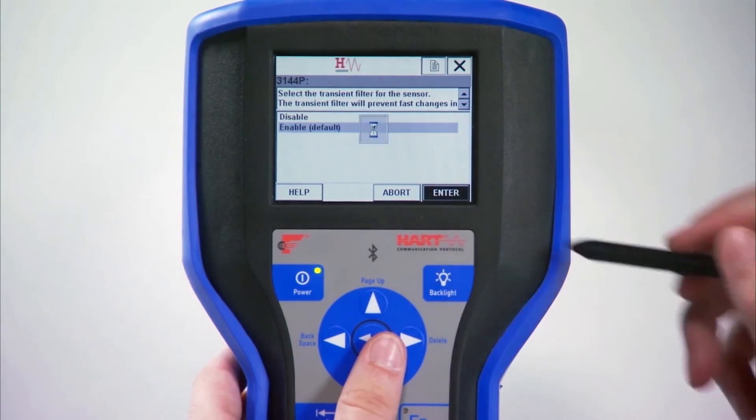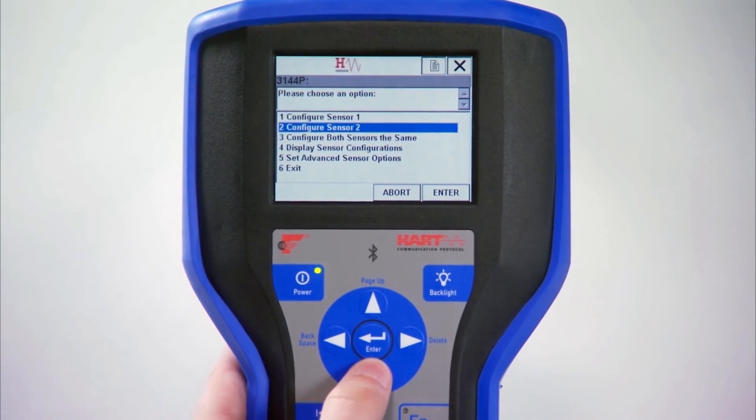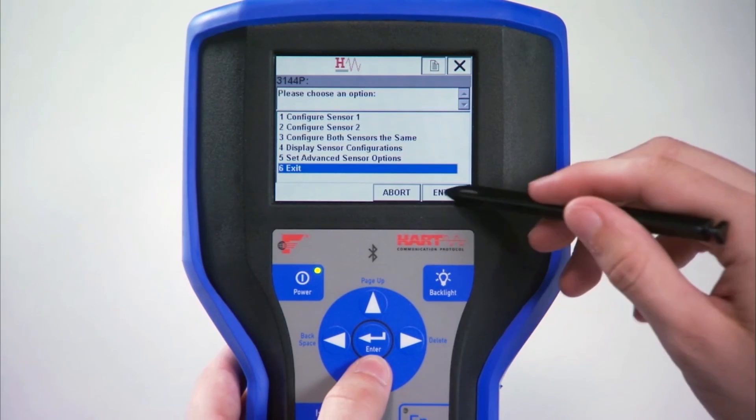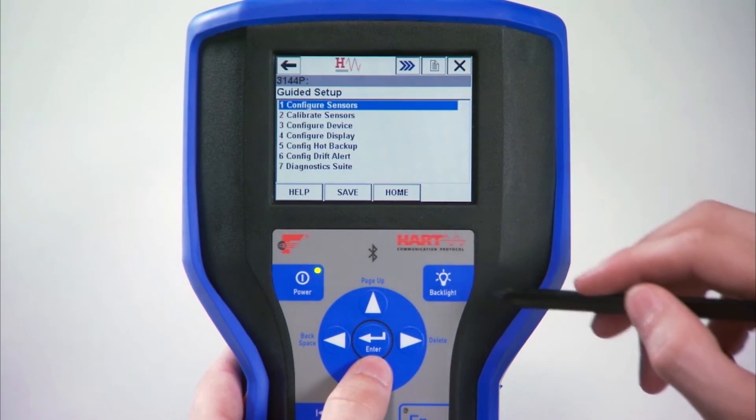Repeat this process for Sensor 2 and select Exit, then press the Home button to get back to the home screen. The sensor should now be correctly configured.